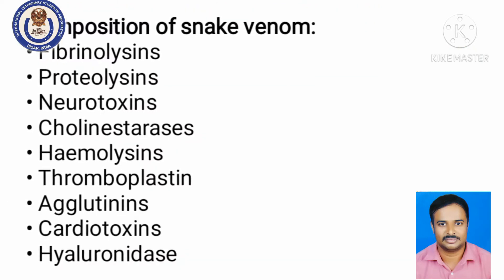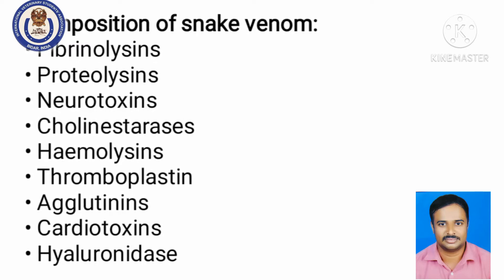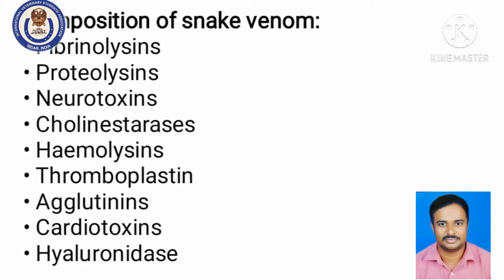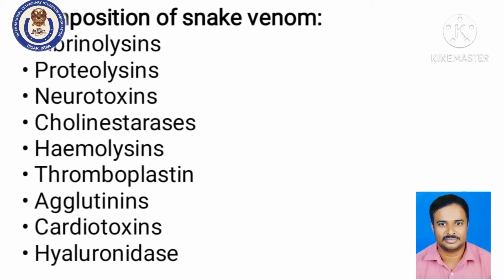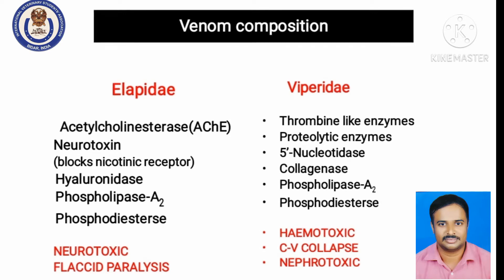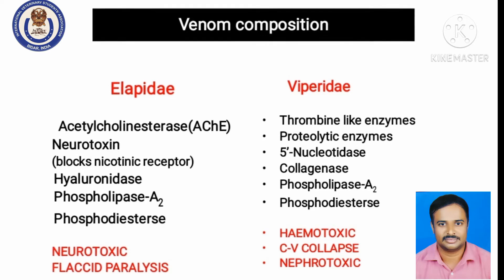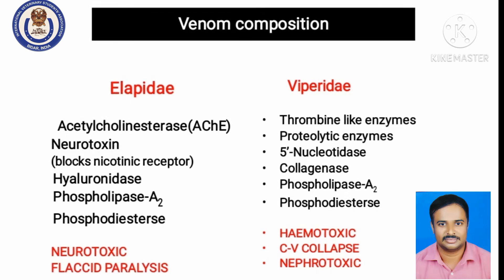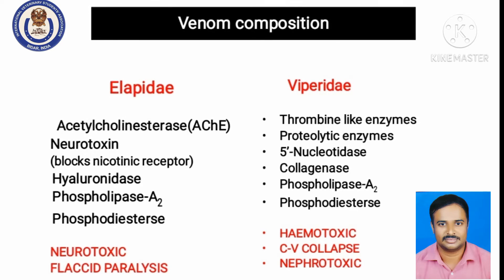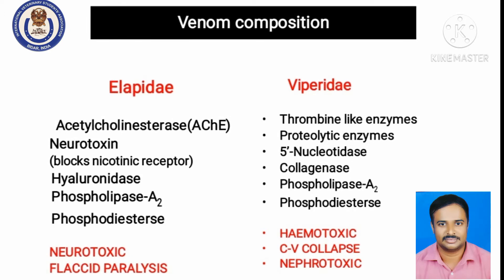The composition of snake venom is a combination of contents that include fibrinolysins, proteolysins, and neurotoxins — specifically cobra venom has neurotoxic properties containing cholinesterase. That's why whenever a cobra bites, you can observe froth from the animal or human mouth — mainly because of cholinesterase inhibition, which inhibits acetylcholinesterase, increasing acetylcholine activity, and because of that muscarinic and nicotinic activity will be increased in the body.